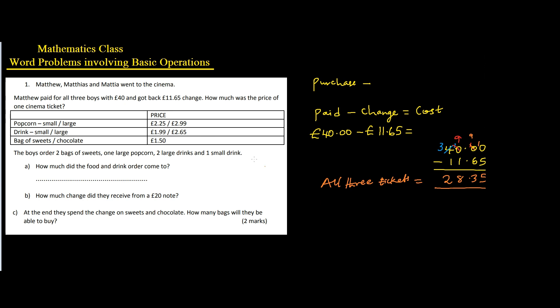So that means all three tickets cost 28.35. Then the question says we have to find the price of one ticket. It said how much was the price of one cinema ticket? That means ticket A, ticket B, ticket C cost this amount, and they have the same amount.